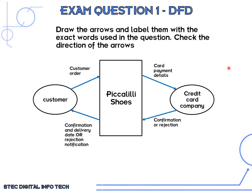Here we can see that we've drawn in our arrows and labeled them with the exact words used in the question. Just make sure you check the direction of the arrows and reread the question to make sure everything is flowing in the right directions. This is a level zero DFD of the system — a very simplified data flow diagram.